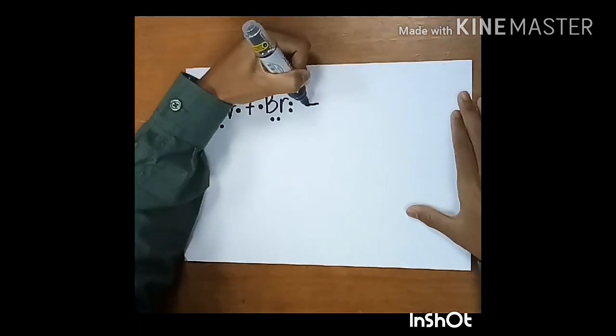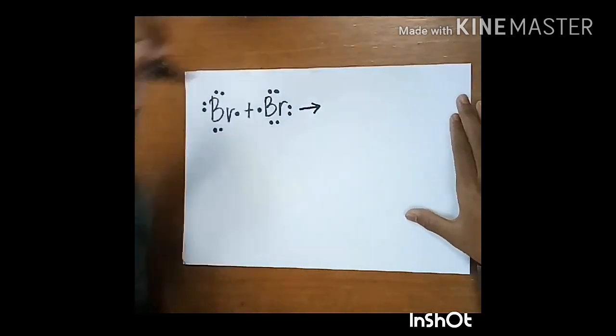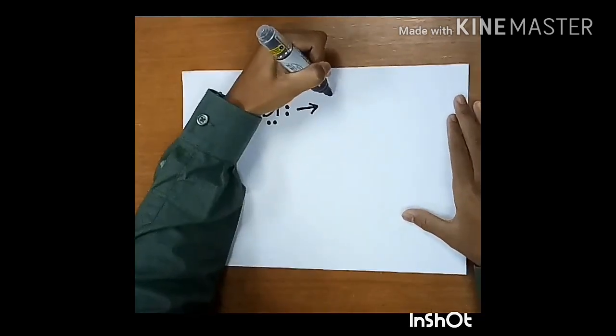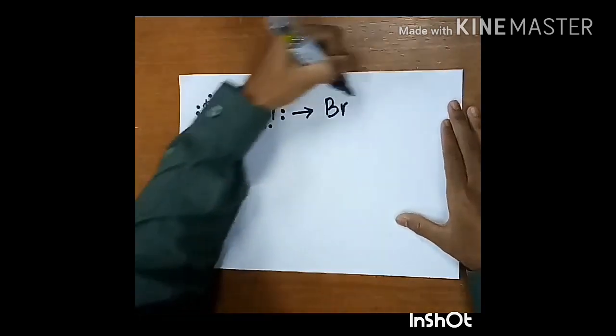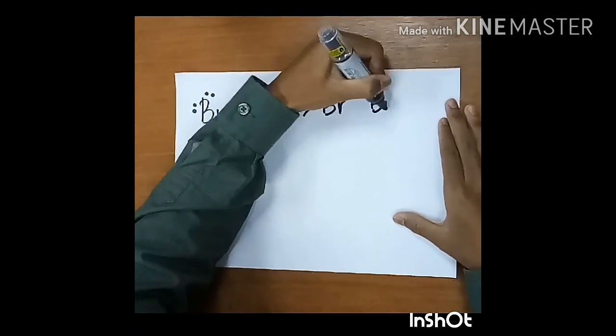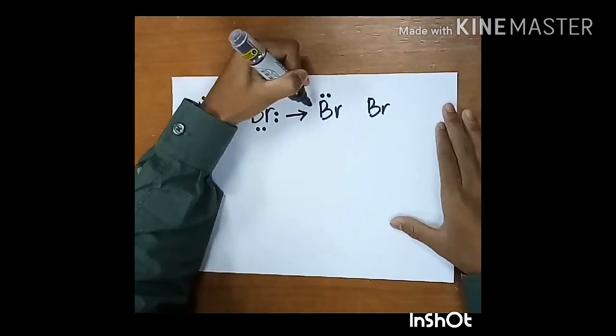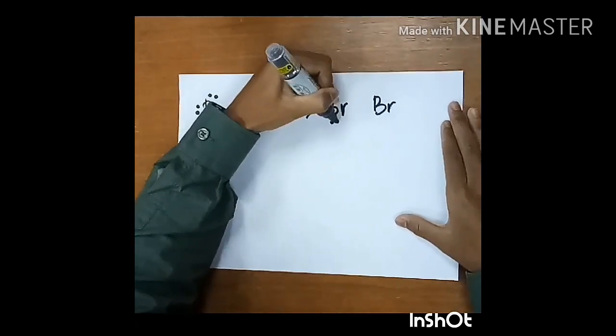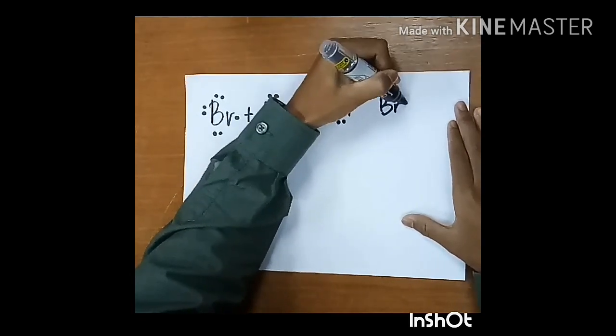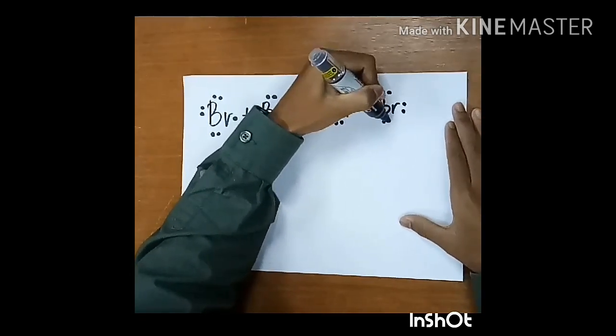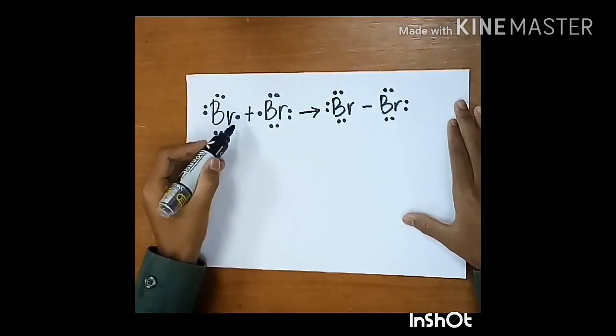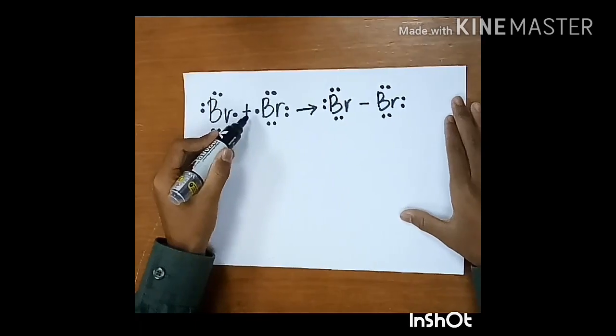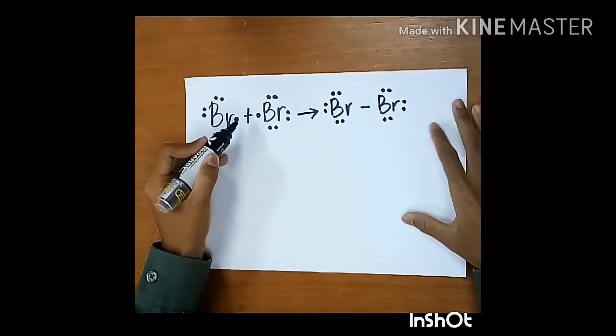So, for this reaction, the Lewis structure that will be formed is like this. Since only one valence electron will be shared, only a single bond will be formed.